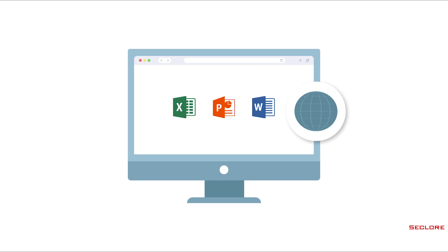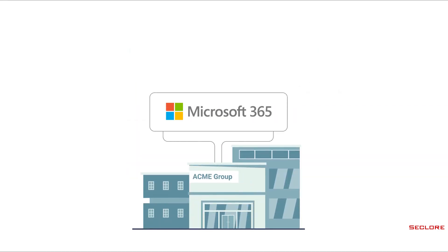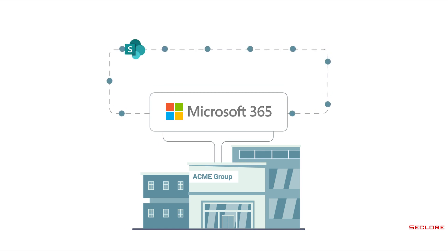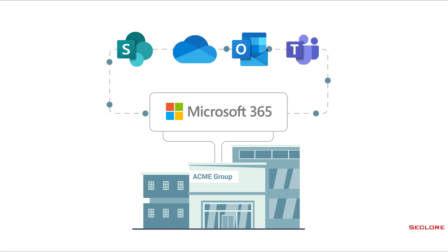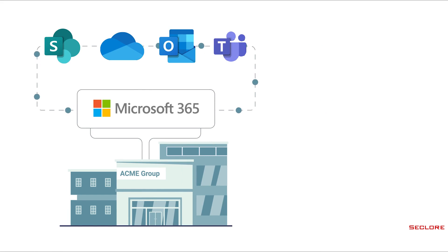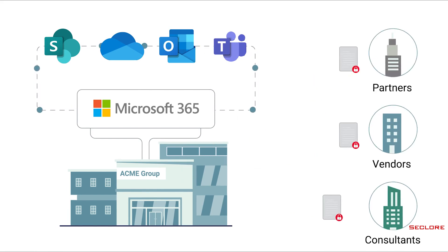So let's get started. Acme Group has adopted Microsoft 365 for document storage and collaboration on the cloud. They utilize Microsoft applications like SharePoint Online, OneDrive for Business, Outlook 365, and Microsoft Teams for internal and external collaboration. However, the majority of internal collaboration at Acme Group happens in Microsoft Teams.